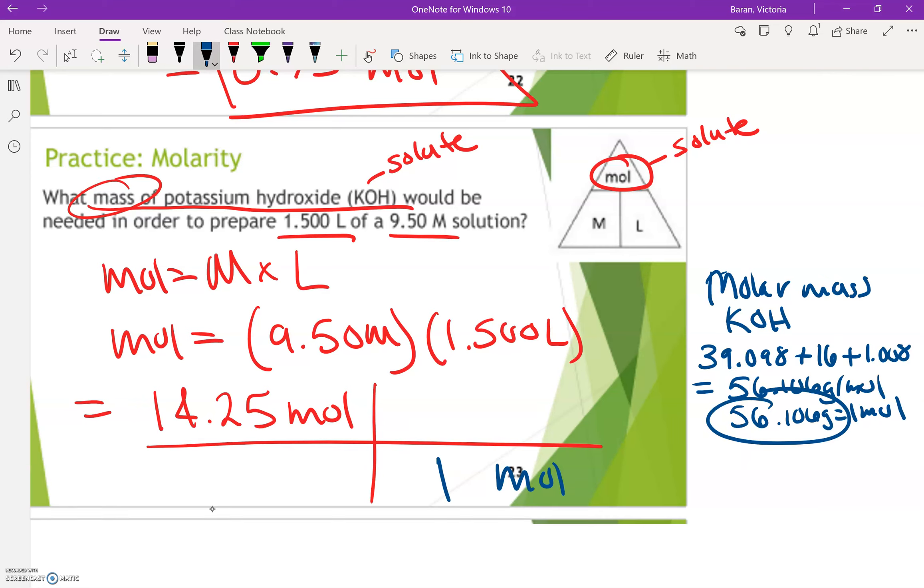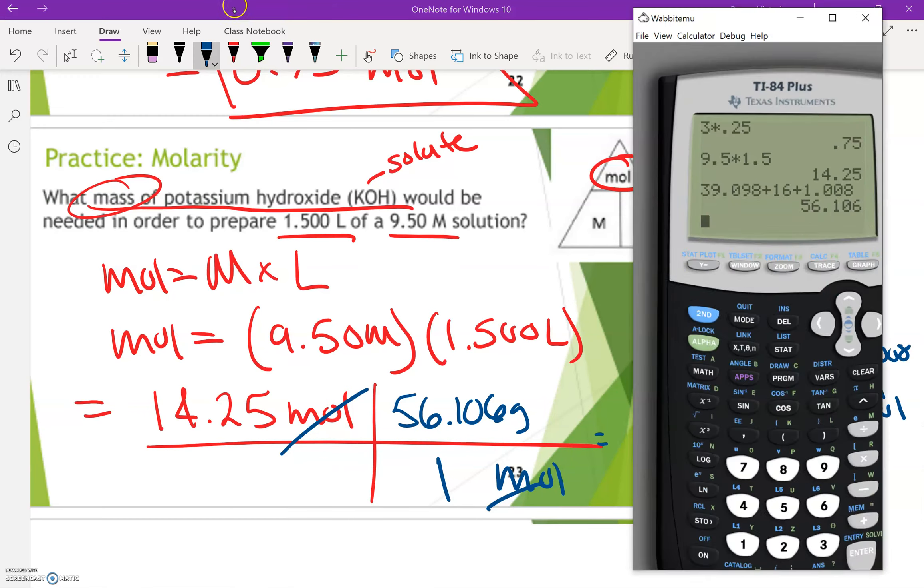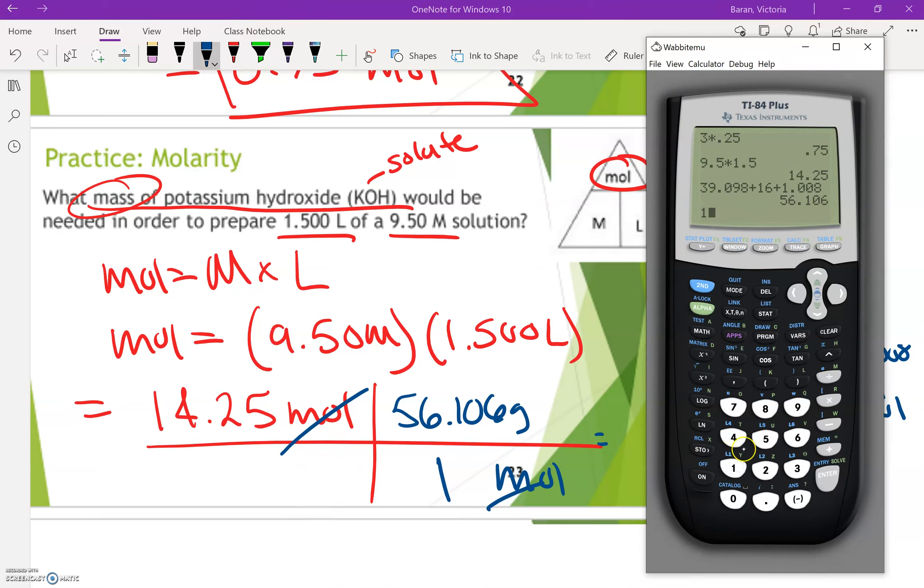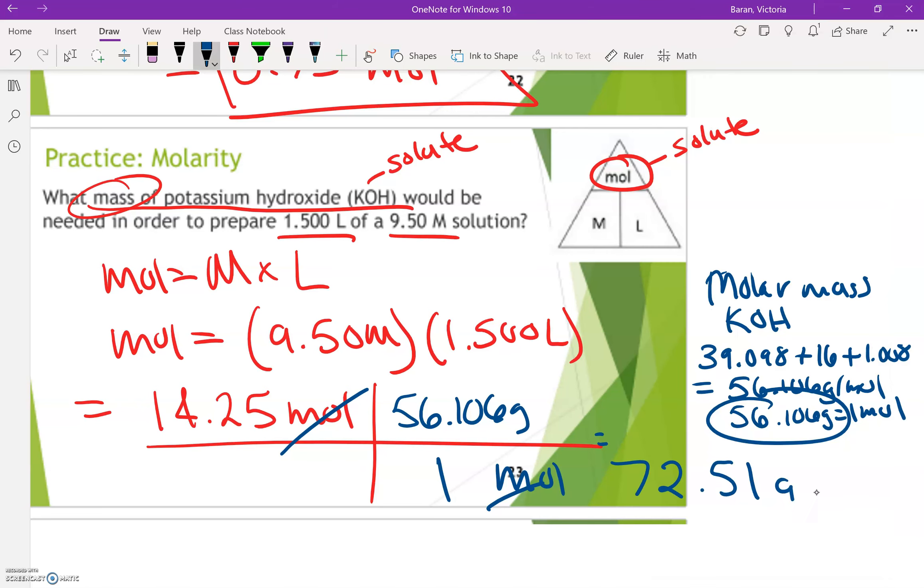So now all I have to do is 14.25 times 56.106 divided by one, which will give you the same answer. So 799.51 grams.